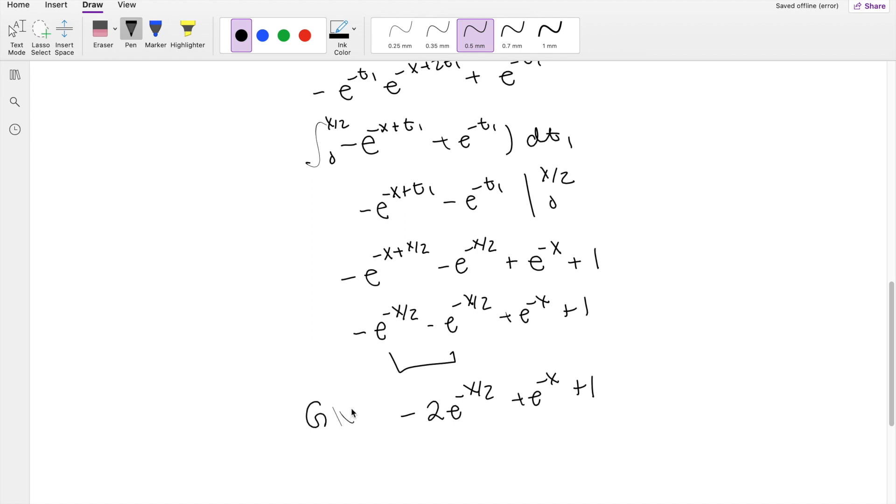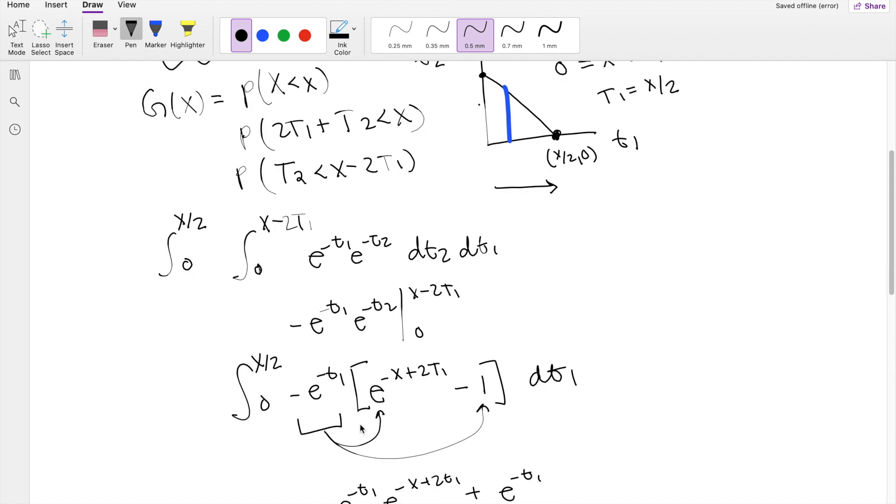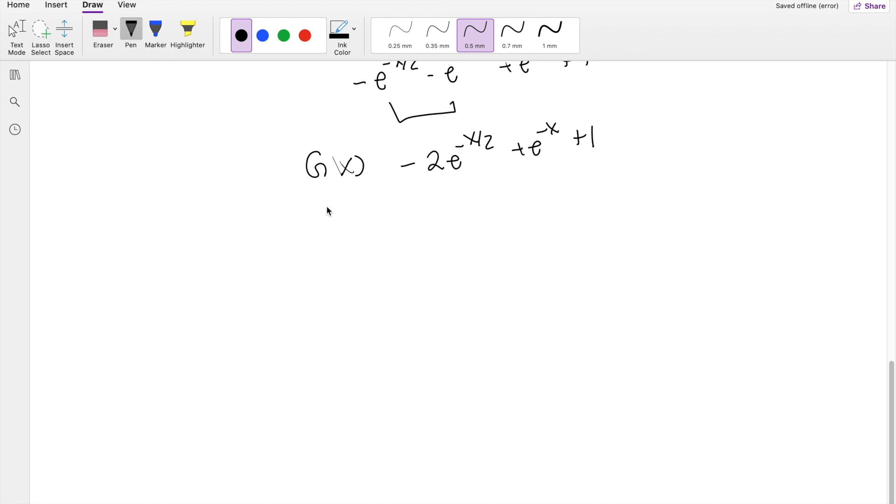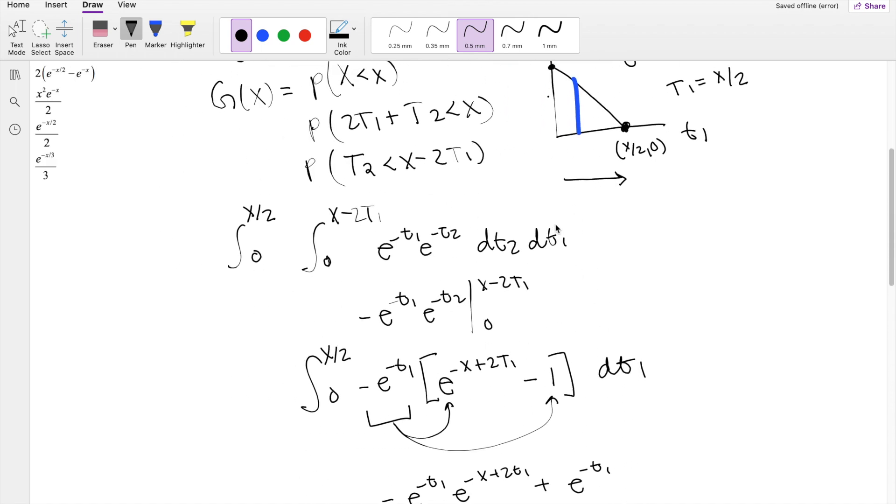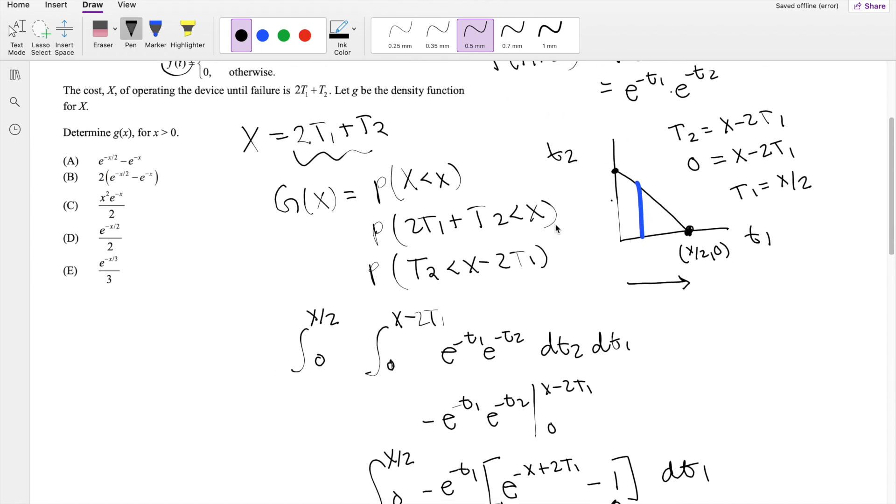And this is actually equal to the CDF, because that's what we were finding. But we're asked to find the probability distribution of g of x, which is just equal to the derivative of G of x, the big G. So when you take the derivative, you get negative negative makes a positive, e to the negative x over 2 minus e to the negative x. And this derivative is just constant, so this is what you're left with, which is our answer A.